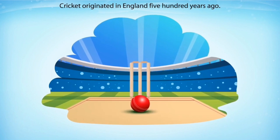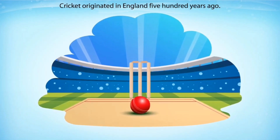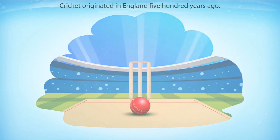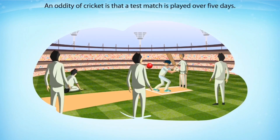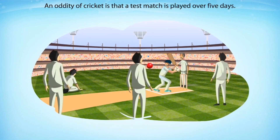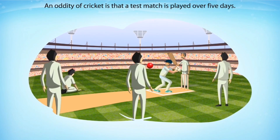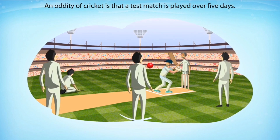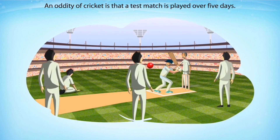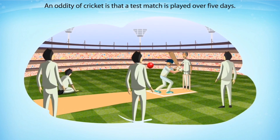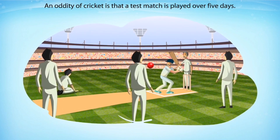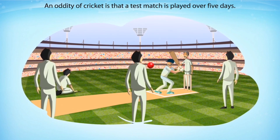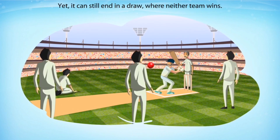Cricket grew out of the stick and ball games played in England 500 years ago. It is played with a bat which means stick or club. Till the 18th century, bats were shaped like hockey sticks. The reason was that the ball was bowled along the ground.